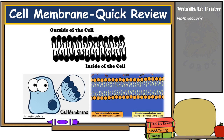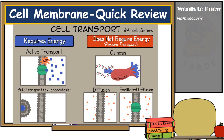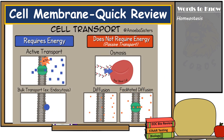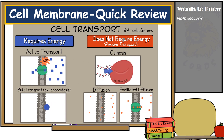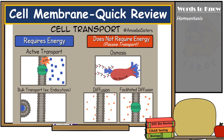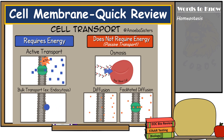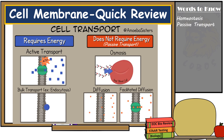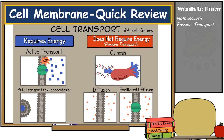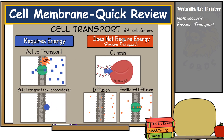Cells need to move molecules and nutrients across the membrane to carry out functions needed for life, and they must also release waste. Sometimes the cell must use energy to move materials across the cell membrane; other times, substances move across without using any energy. The movement of materials into or out of the cell without the expenditure of energy is called passive transport, and the movement which does require energy is called active transport.